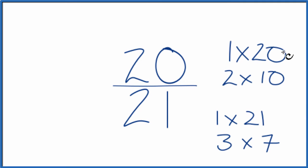So you'll notice when we look at the factors for 20 and then 21, the only thing they have in common, the greatest common factor, is just going to be one.